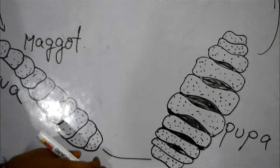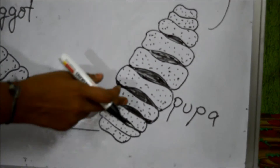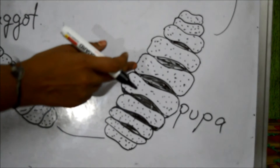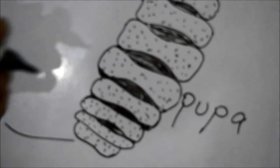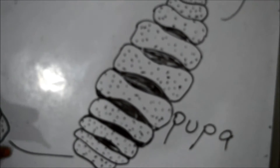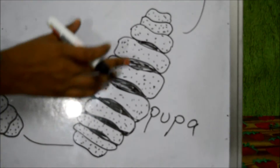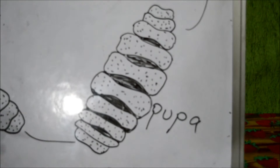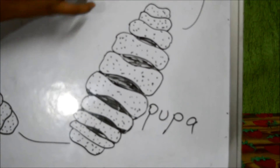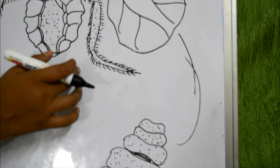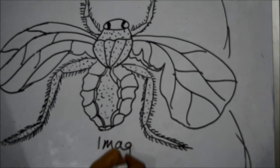After completing the larval stage, it enters the stage of pupa. The fully grown brown larvae moves to a dry place in dung and changes to pupa. This pupa is dark brown and barrel-shaped. Within a week, the pupa changes into an adult housefly, also called imago.